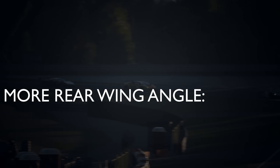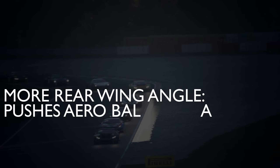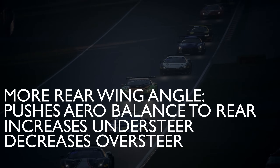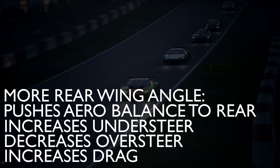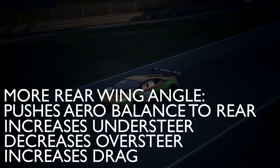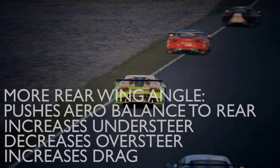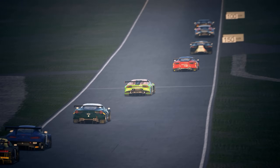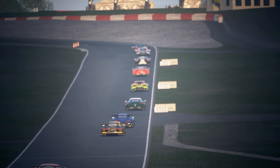Raising the angle of attack of the rear wing will improve the grip to the rear tyres, shifting towards a more understeery balance, though rear wing increases often come with a heavy drag penalty. Conversely, lowering the angle of the rear wing will induce more oversteer and reduce drag.